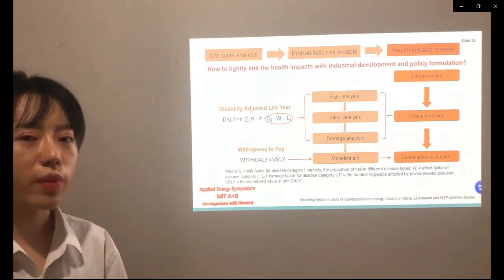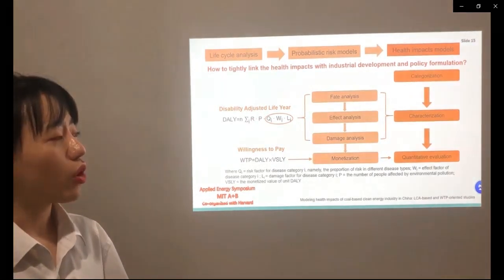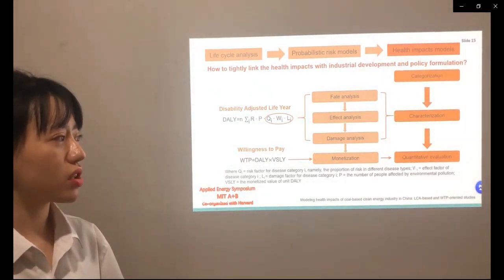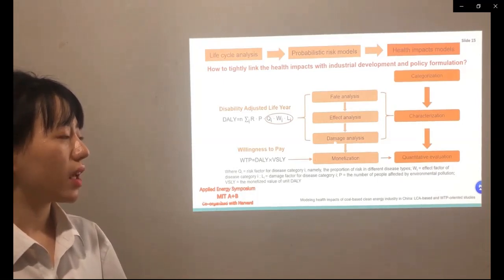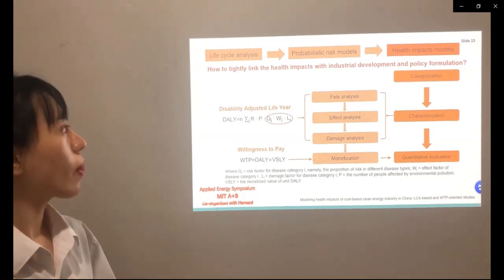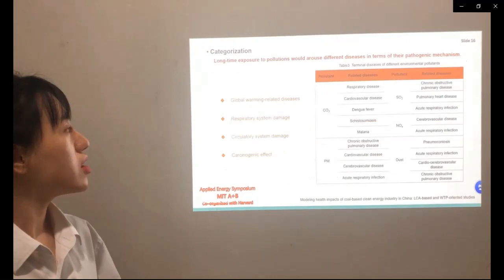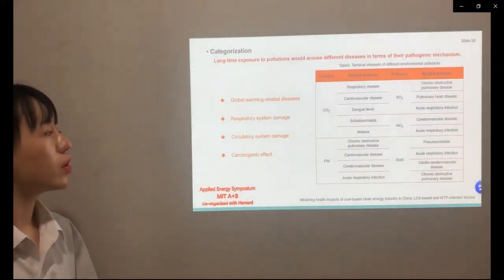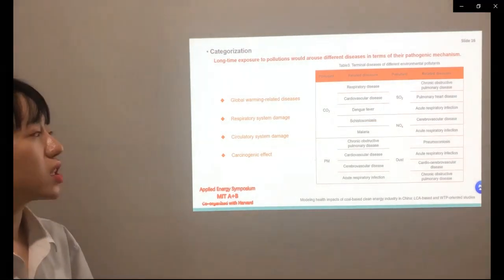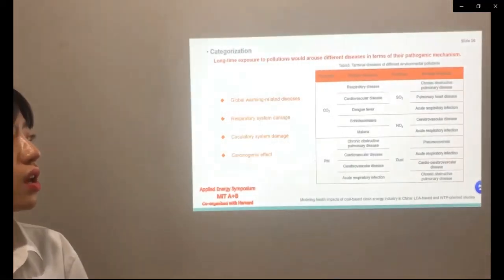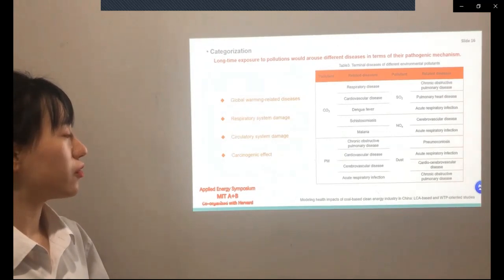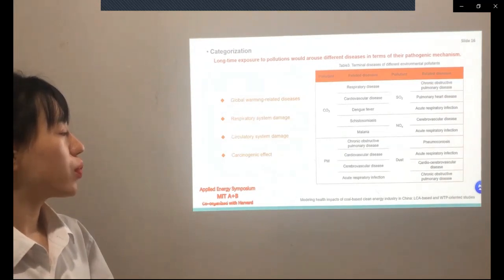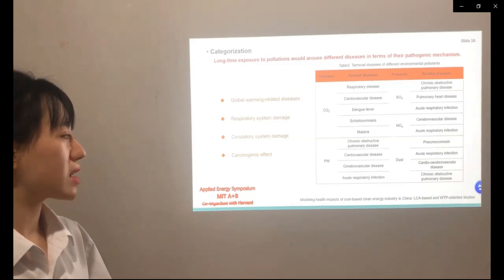To realize this transformation, here are three steps: categorization, characterization, and quantitative evaluation. In impact categorization, we know that long-time exposure to environmental pollution would cause different diseases in terms of their different pathogenic mechanisms. Thus, in our study, we originally considered four types of terminal diseases: global warming-related diseases, respiratory and circulatory system damage, and carcinogenic effects.